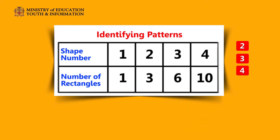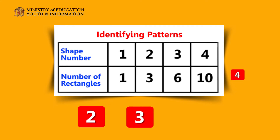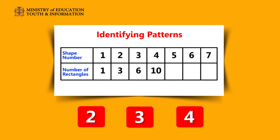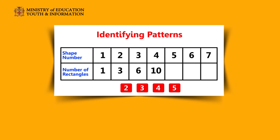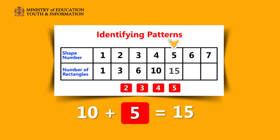I see the pattern! Me too. First the rectangles increased by 2, then 3, then 4. That is amazing — 2, 3, and 4. So the next shape would increase by 5 rectangles. Exactly. So 10 plus 5 equals 15, meaning shape 5 would have 15 rectangles.